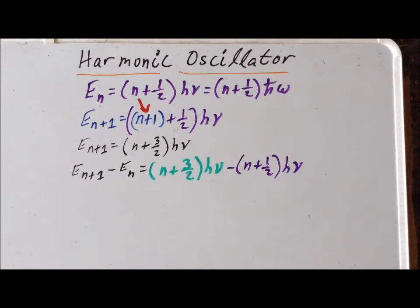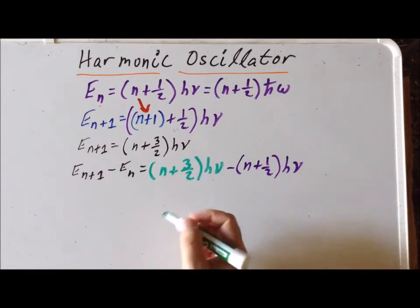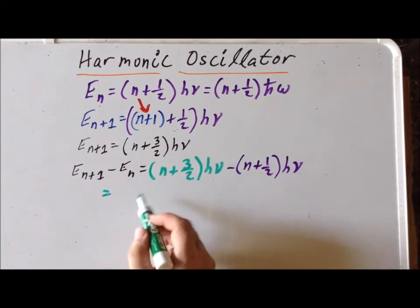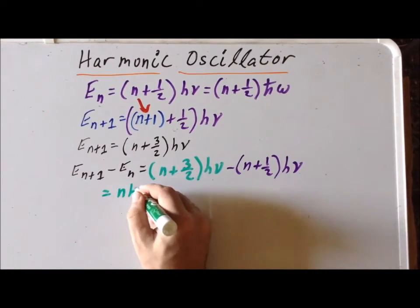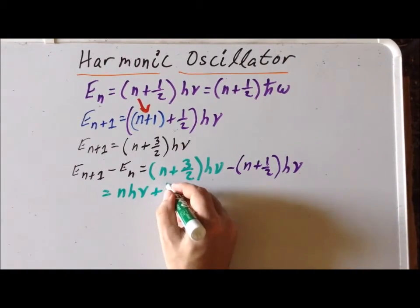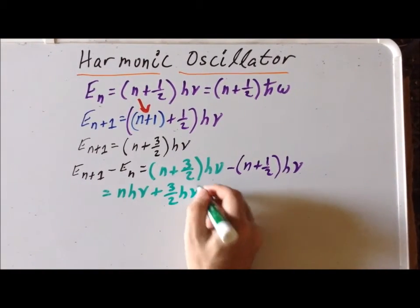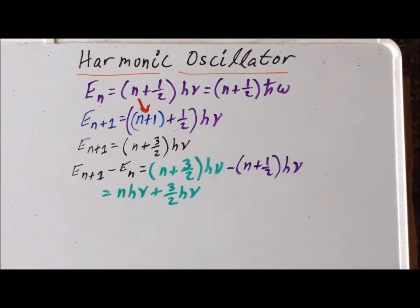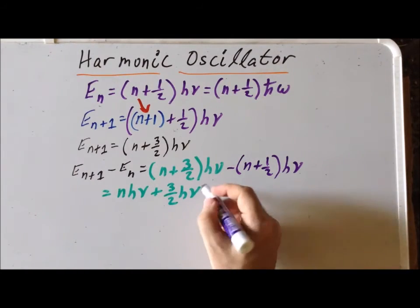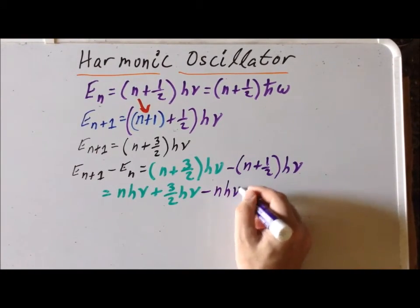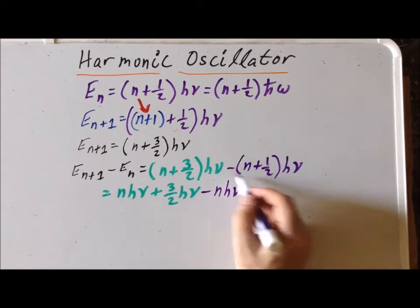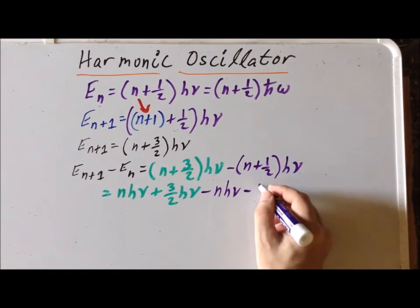Now we're going to expand these expressions. In the case of e sub n plus one, we get n times h nu plus three halves h nu. We simply use the distributive law right there. And then for the e sub n part, we have minus n h nu, and minus half, so we have to distribute the minus sign, times one half h nu.